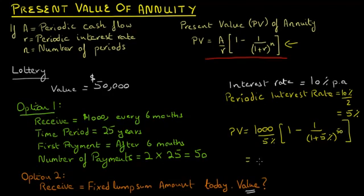This equals $18,255.93. So if you're offered a fixed lump sum amount of $18,255.93 today, then you would be indifferent between the two options.